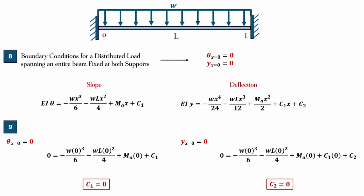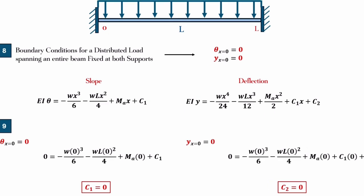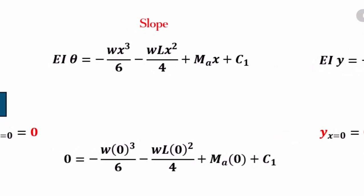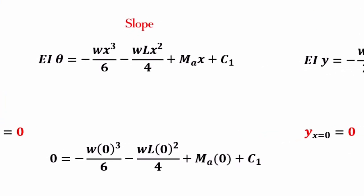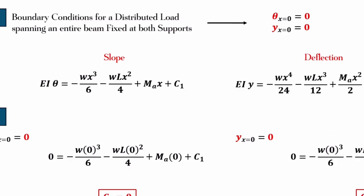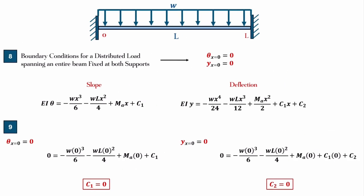I'm going to go ahead and apply theta is zero when X is zero. So, that means for every X that you see, which is X cubed, X squared, and X on the slope equation, that's going to be zero, zero, zero, and then C1. And then theta is zero, so that means our C1 is zero.